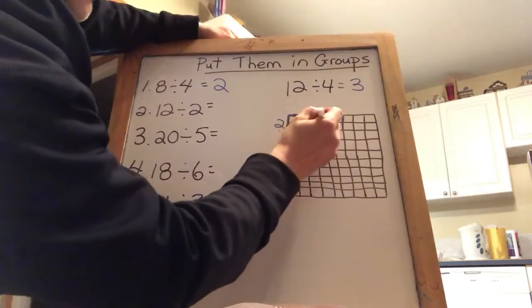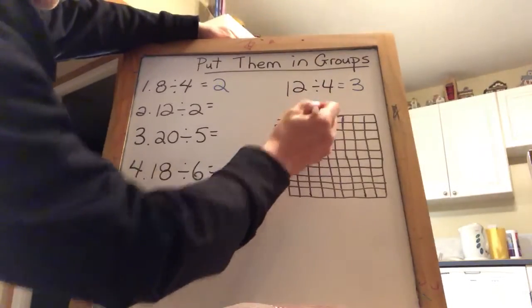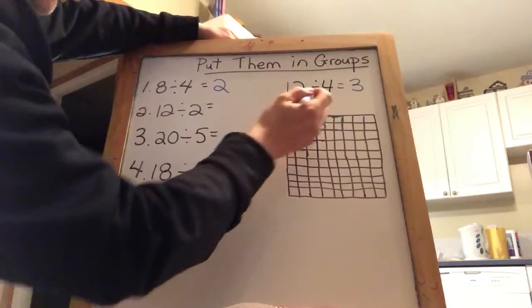All right, we have 12 in the middle here, and we have gone 6 across. So 12 divided by 2 would be 6.